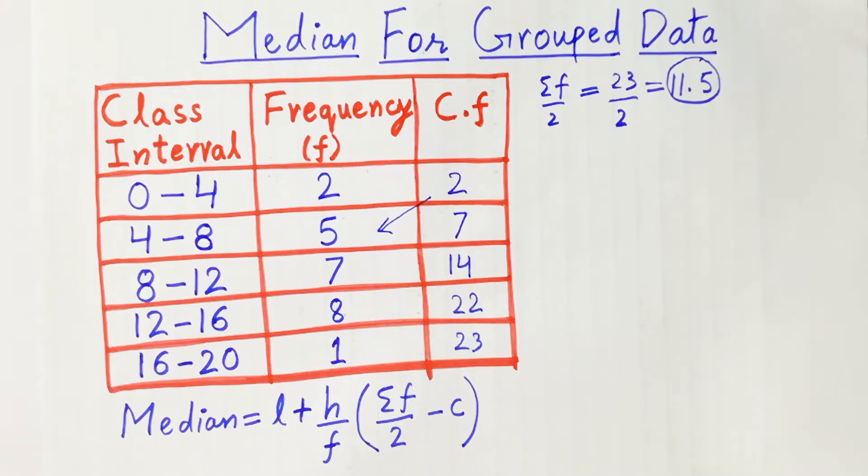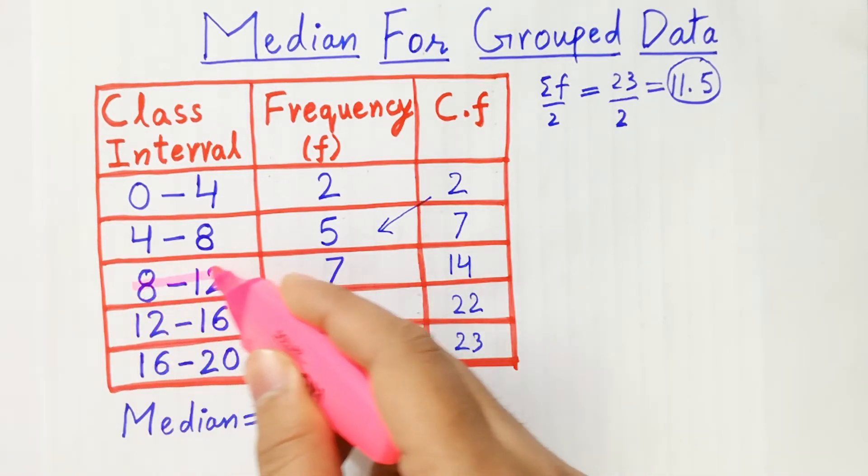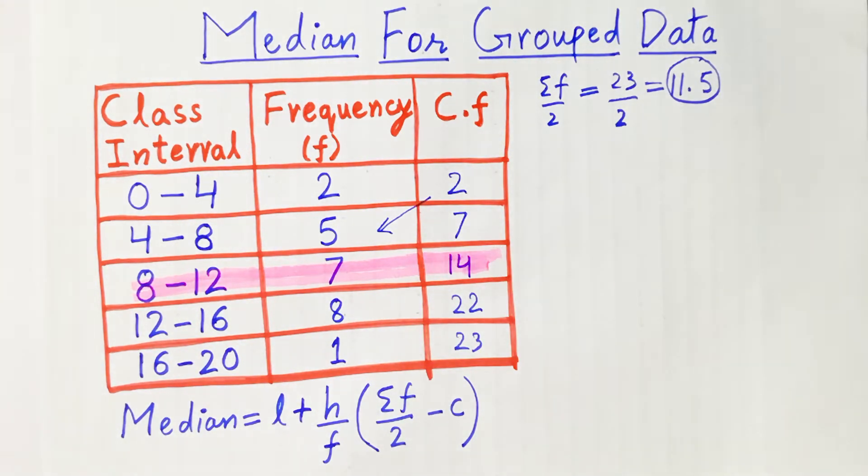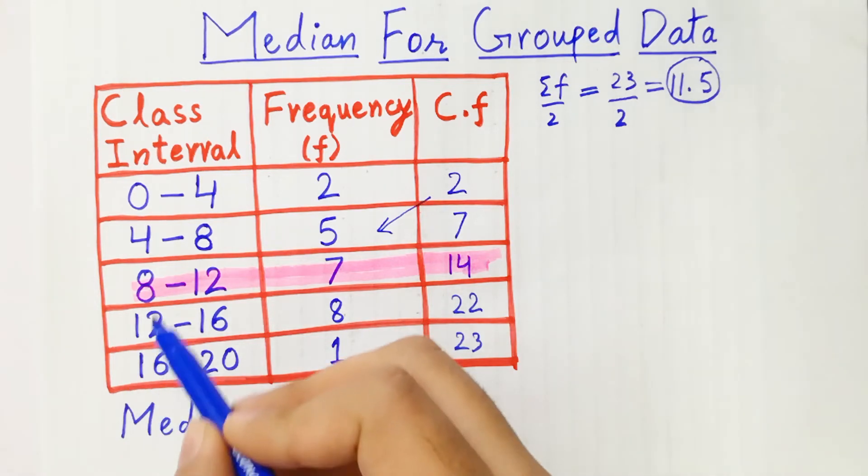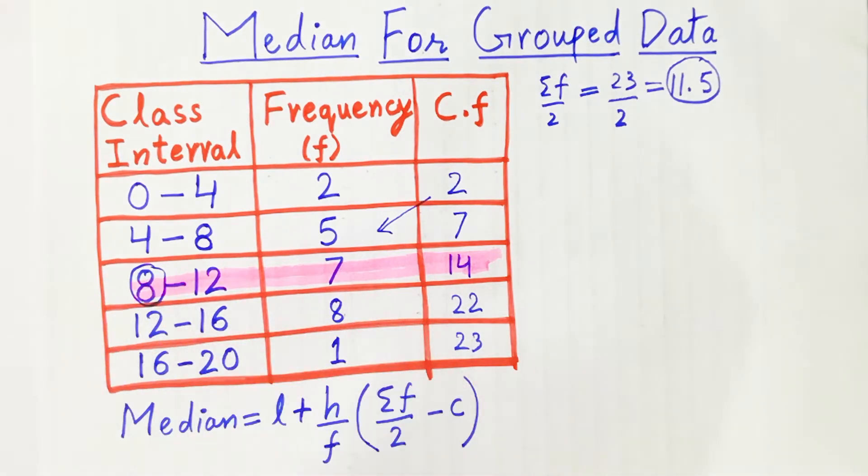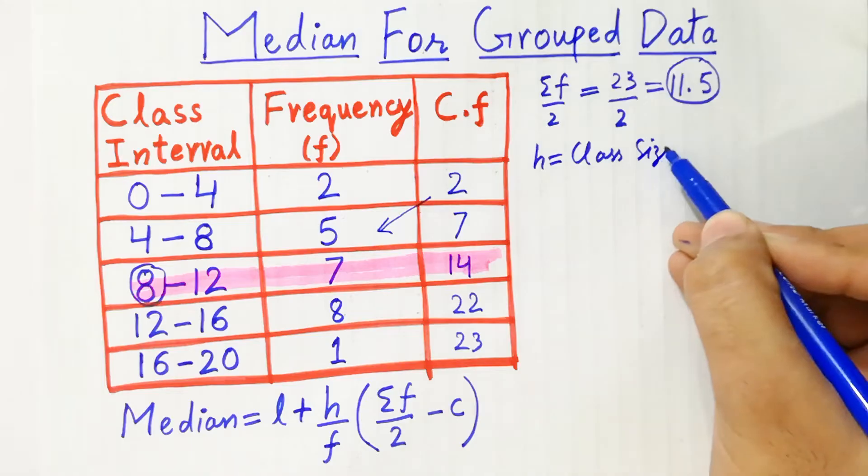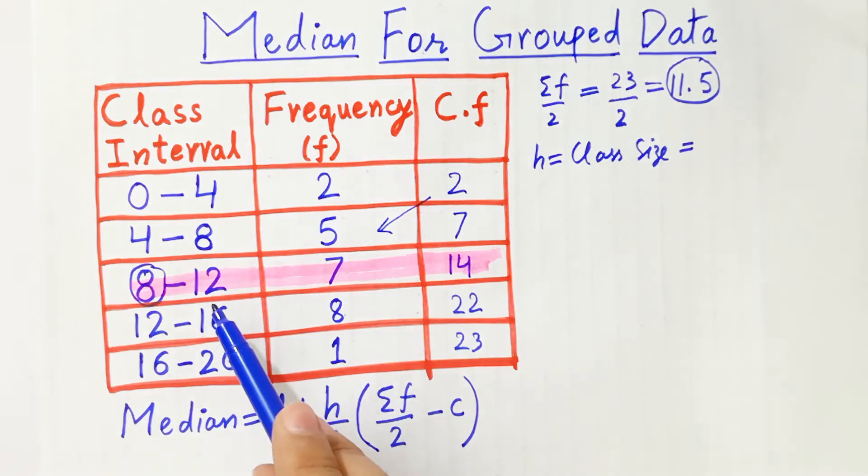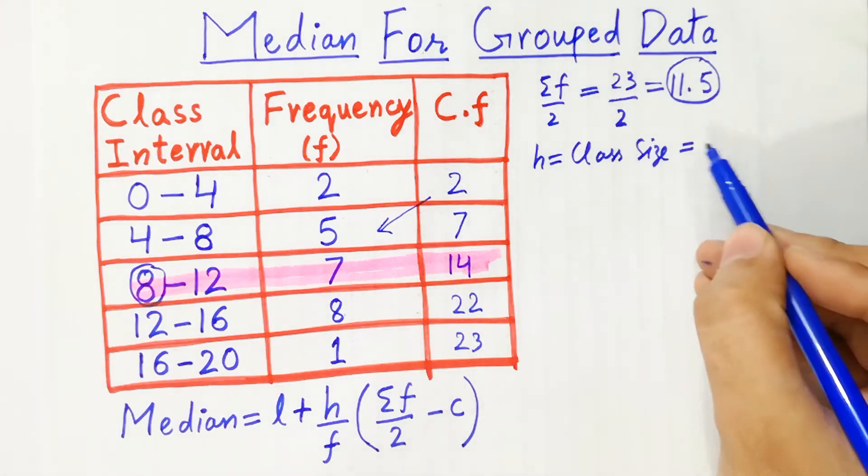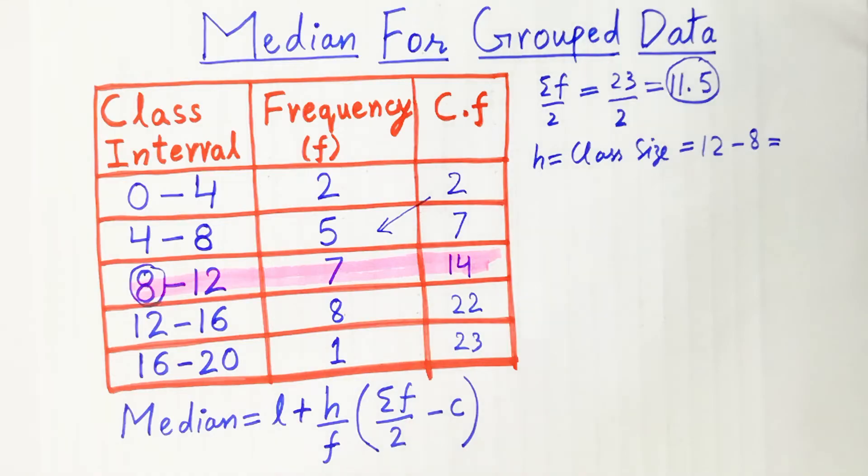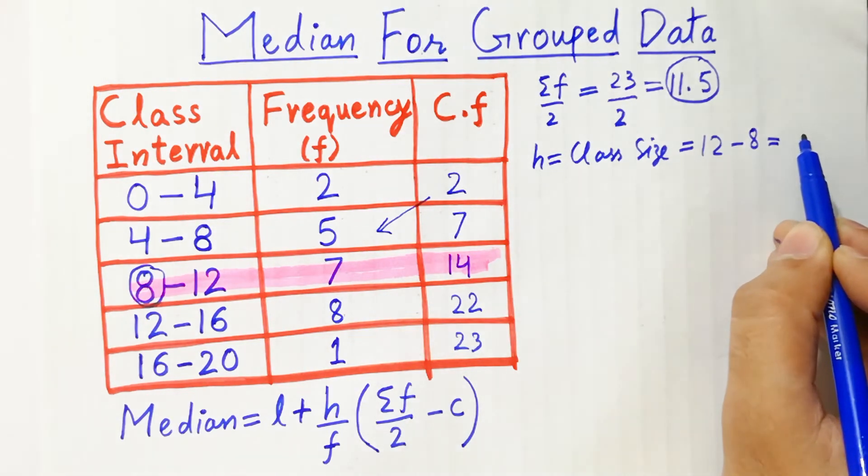So our median value will be calculated by this method. Here the value of lower limit will be 8, and h is the class size, which is equal to upper limit minus lower limit. So 12 minus 8 will be equal to 4.